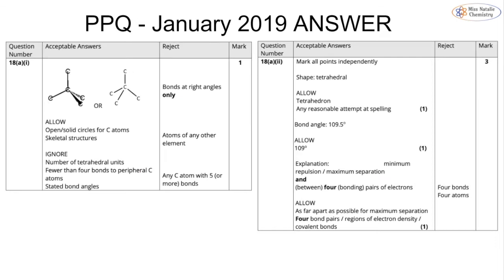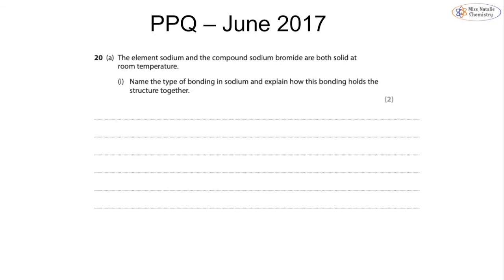That gives you three marks. The mark scheme accepts four sigma bonds in a tetrahedral shape — you can show wedge and hash bonds or just straight single bonds, both are fine. Note that bonds drawn at right angles will not be accepted; when answering a bonding and structure question, the tetrahedral shape must be shown. In organic chemistry questions the convention is different, but here a tetrahedral shape is required.